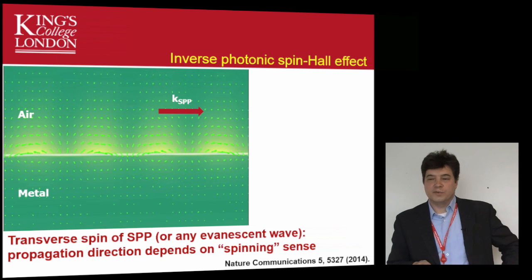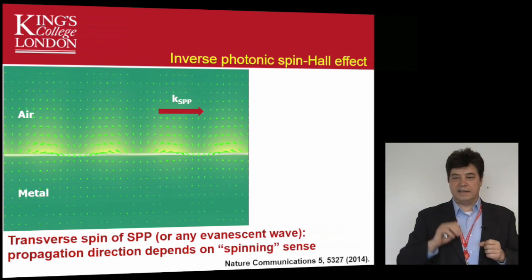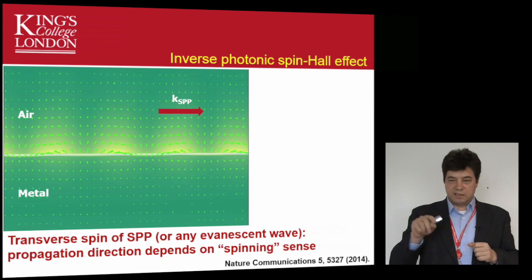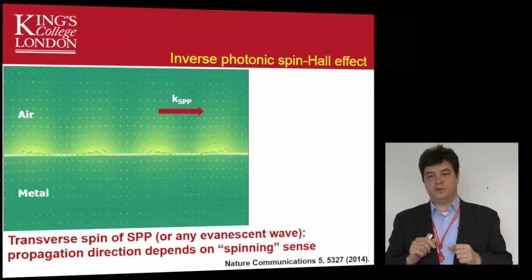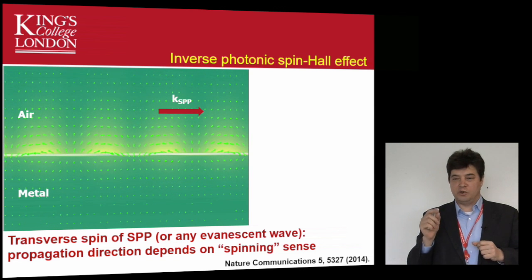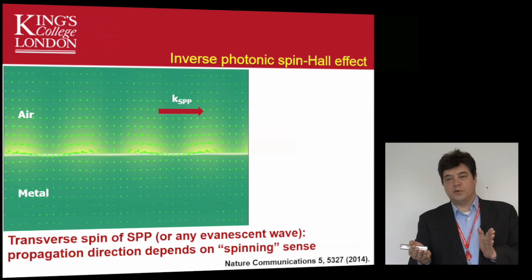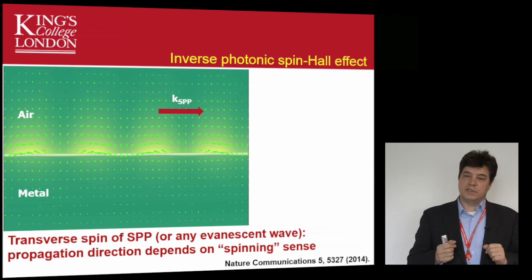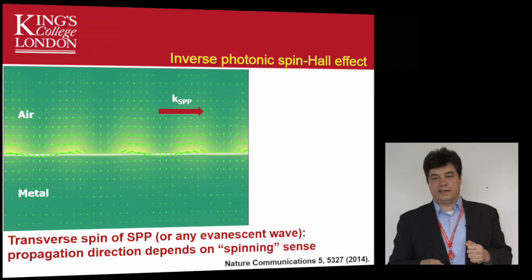To illustrate this for surface plasmon polaritons: the surface plasmon polariton propagates on the metal-air interface in one direction, and a small rotating arrow indicates the direction in which the electric field rotates in the SPP wave. You see it always rotates in the same direction, and to change the direction of rotation you must change the direction of propagation of the surface plasmon polariton. The direction of the wave vector completely determines the direction in which the electric field rotates, essentially determining the handedness of the SPP field.